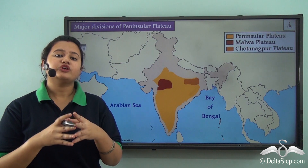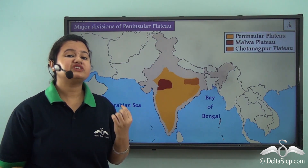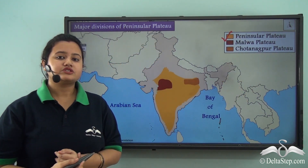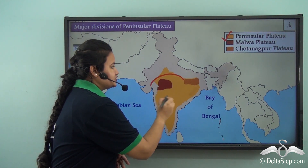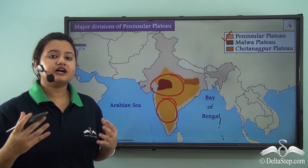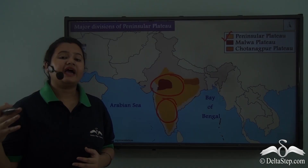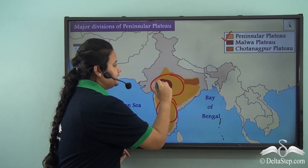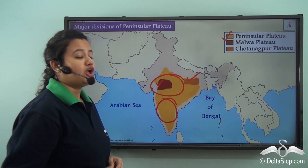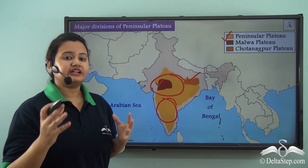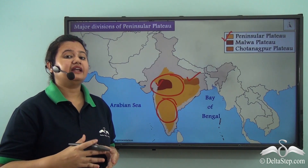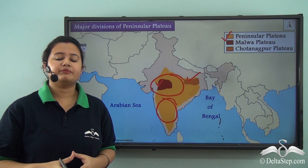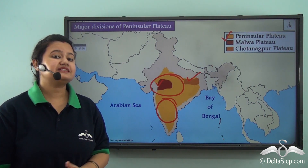In today's lesson we focused on the Peninsular Plateau — an important physical division of India located in the central and southern part of the country, covering almost half of India. We discussed two of its divisions: the Malwa Plateau and the Chhota Nagpur Plateau — their boundaries and the rivers that flow through them. In our next lesson, we shall discuss another division of the Peninsular Plateau: the Deccan Plateau.